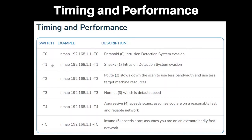T1 is a good option for scans that need to be performed discreetly. T2 is the polite option and it slows down the scan to use less bandwidth and fewer target machine resources. It is a good option for scans that need to be performed on sensitive or shared networks.